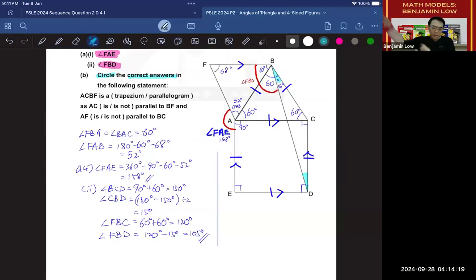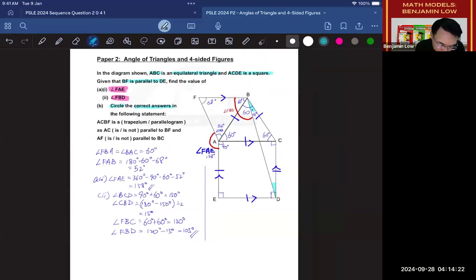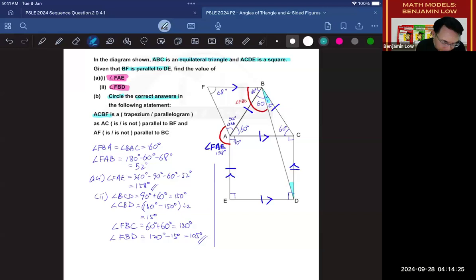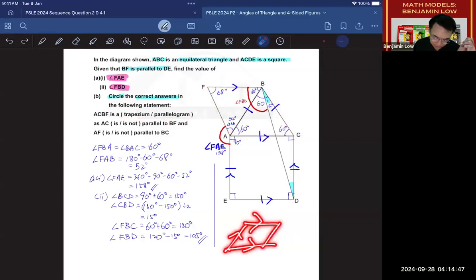ACBF. So, where is ACBF? ACBF. Is it a trapezium or a parallelogram? What is the difference between a trapezium and a parallelogram? Well, for a parallelogram, you got two pairs of parallel lines. For a trapezium, you should only have one pair of parallel lines. So, we need to know whether this shape has two or one pair.